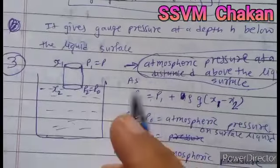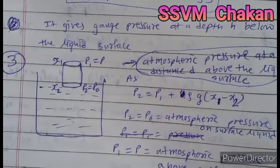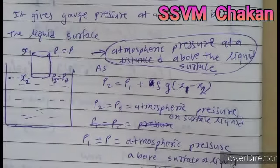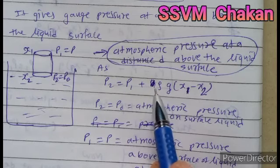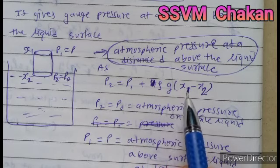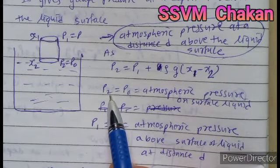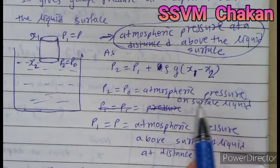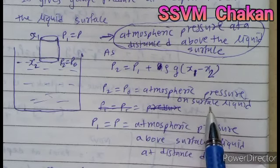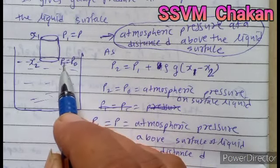Now we bring the cylinder above the liquid so that its bottom just touches the liquid surface. Using P2 = P1 + ρg(X1 − X2), P2 becomes P0 — the atmospheric pressure on the surface of the liquid.